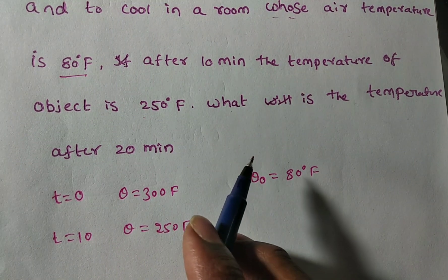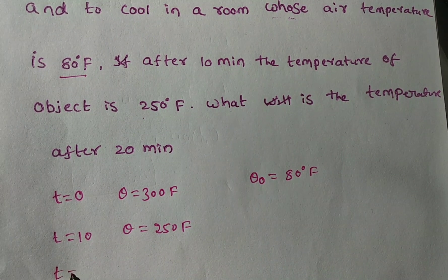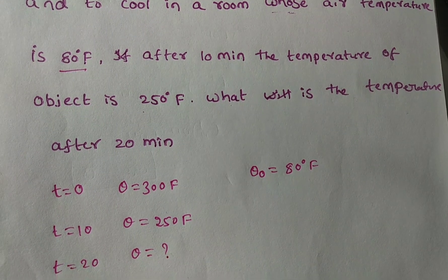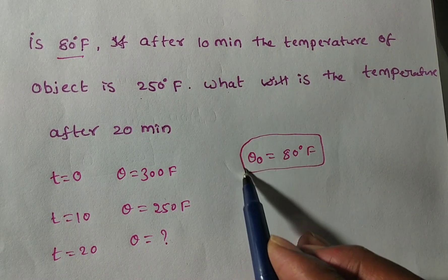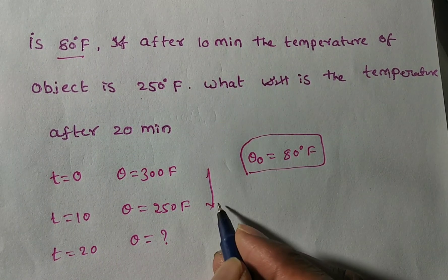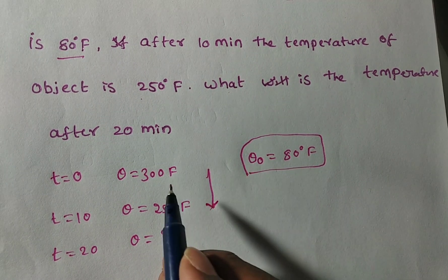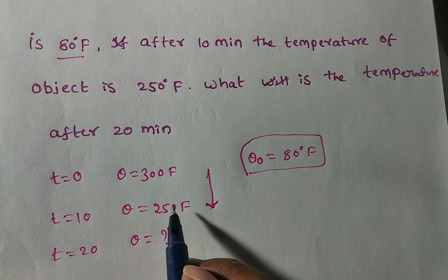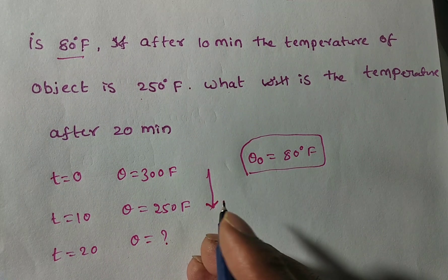The question asks: what is the temperature after 20 minutes? So if T is equal to 20 minutes, then what is the temperature of the object — they are asking for theta. Due to the surrounding temperature, the object temperature is cooling and decreasing. So this is an application of Newton's Law of Cooling.